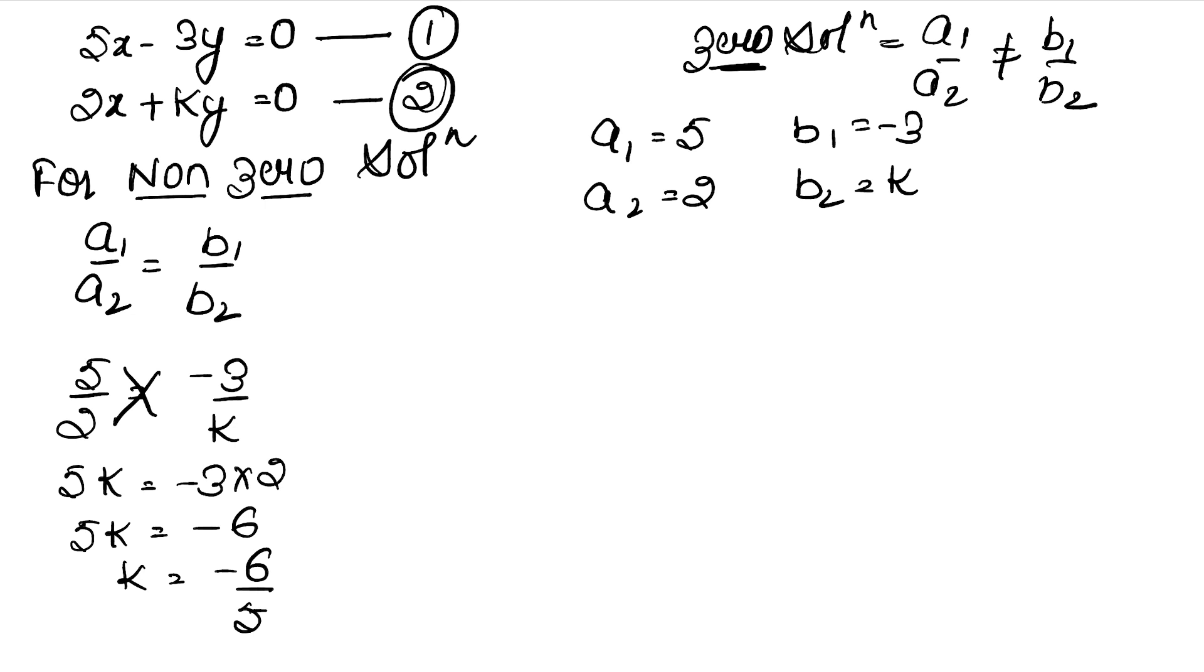So when will there be non-zero solution? These equations, hence, these equations have non-zero solution when K is equal to minus 6 upon 5.